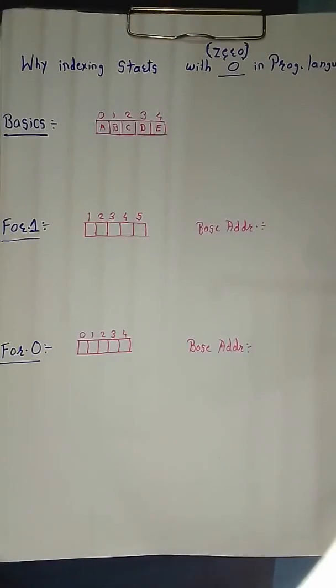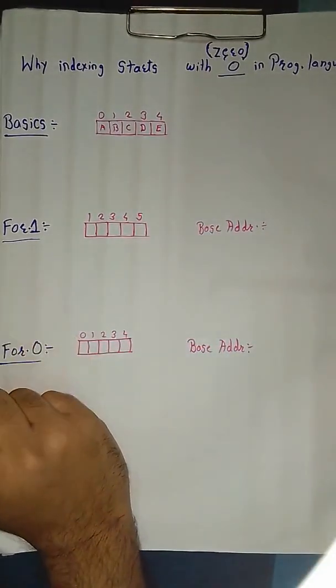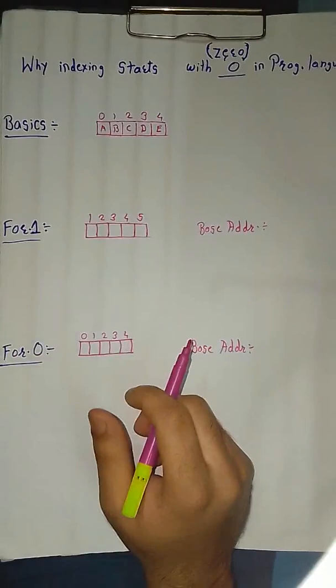Hello everyone, my name is Piyush and I welcome you to this video. Today's topic is why indexing starts with 0 in programming languages. As we all know that in programming languages, indexing always starts with 0.